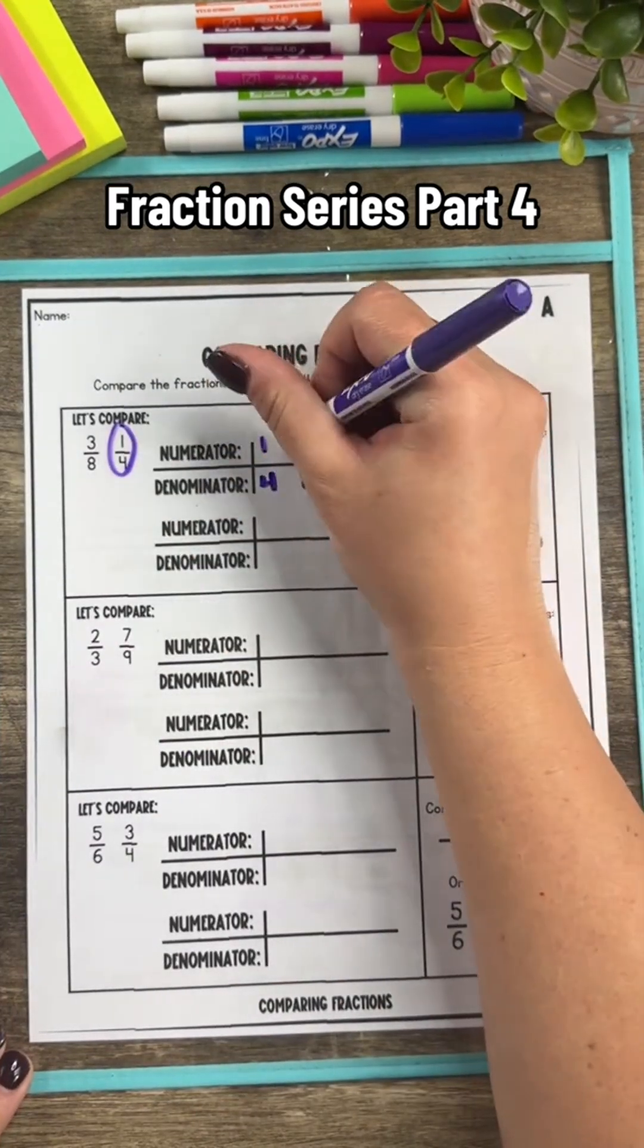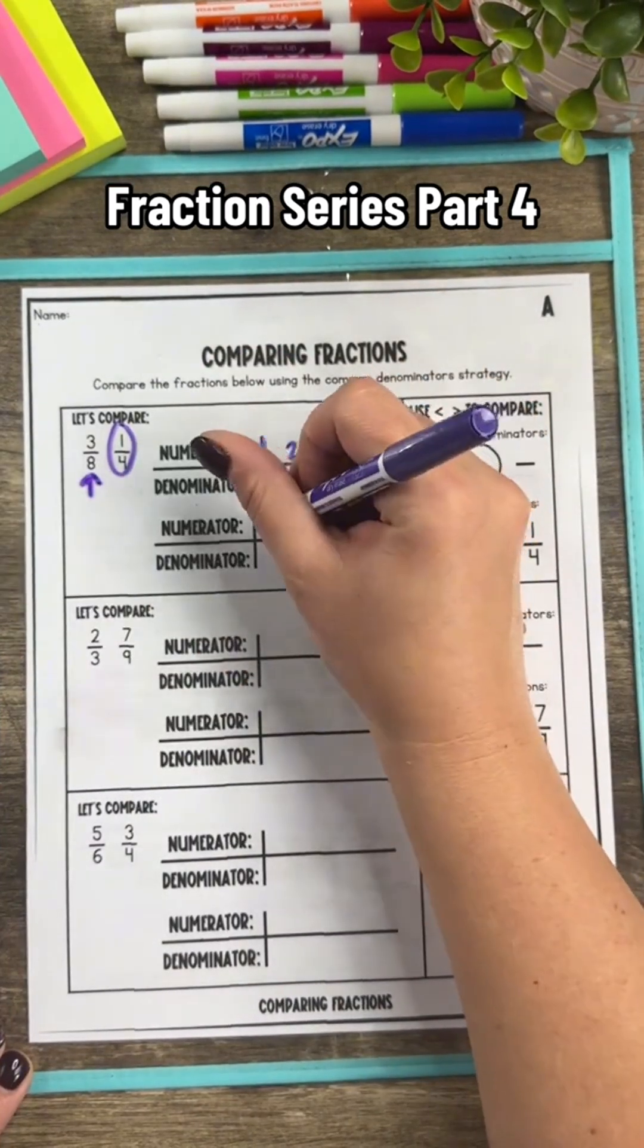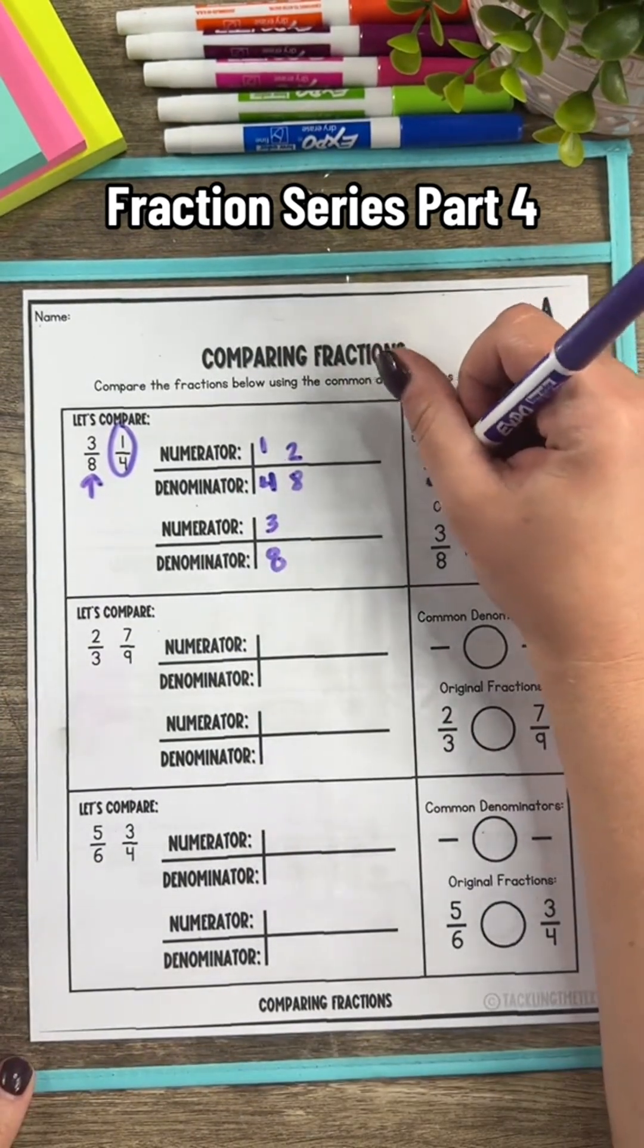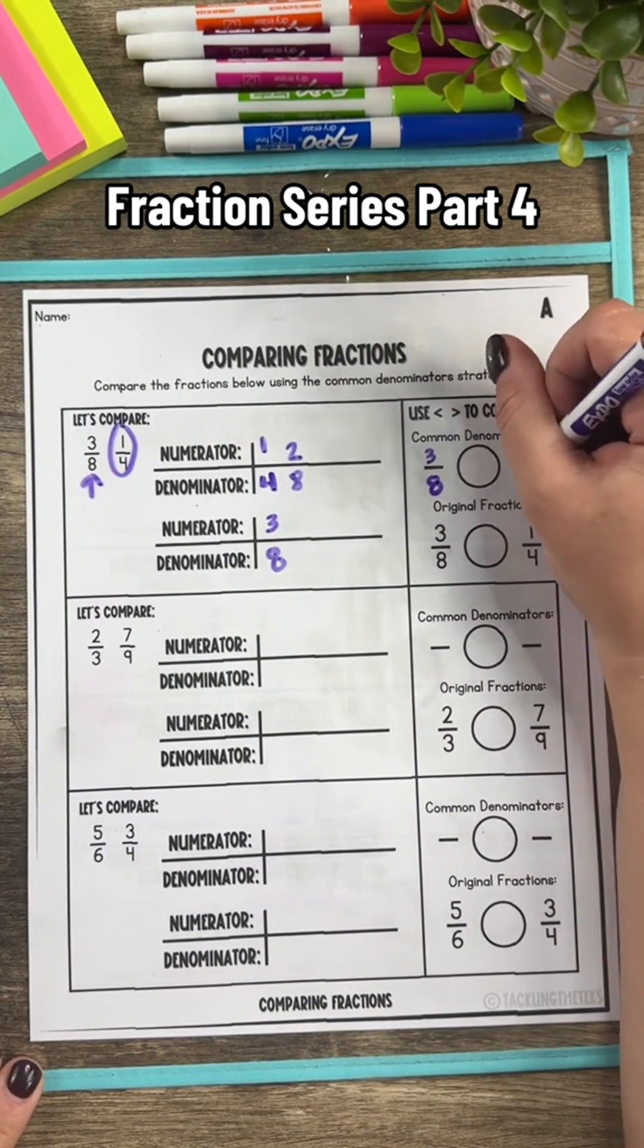Another strategy for comparing fractions is to use common denominators. This is where your students will list the multiples of the denominator and basically use equivalent fractions to help them